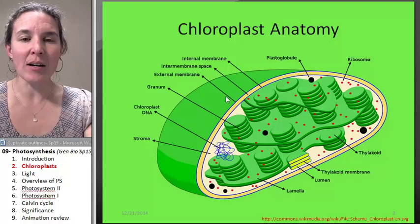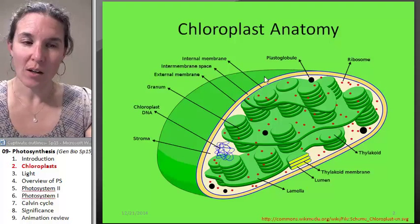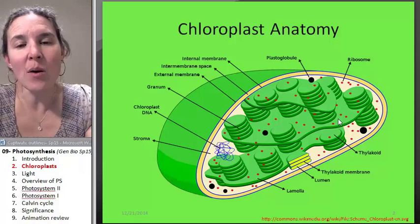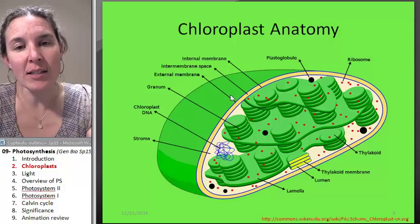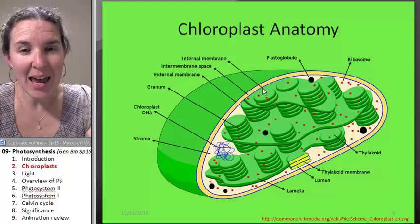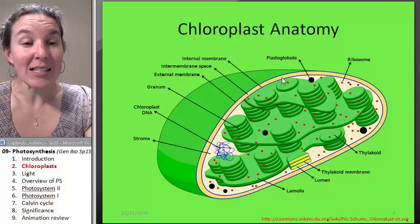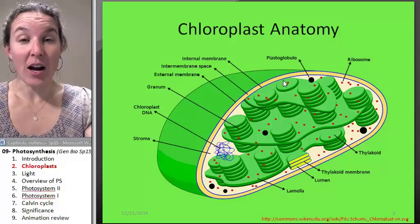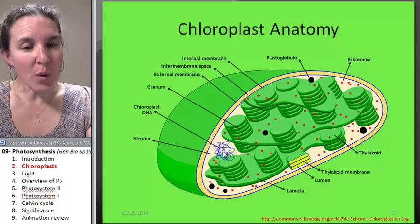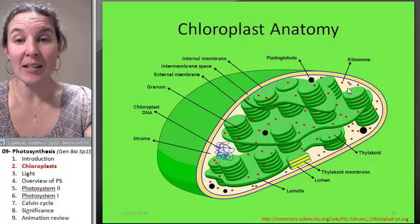This is a picture of a chloroplast. And again, I want you to notice that there is an outer membrane, an intermembrane space, and an inner membrane. The intermembrane space is irrelevant for us when we're talking about the process of photosynthesis. I do want you to notice that the chloroplast also has its own DNA, its own ribosomes.